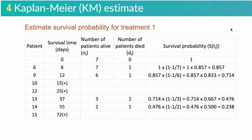This table shows how to calculate survival probability for treatment 1. Treatment 1 has 6 patients listed in column 1. Column 2 is the survival time, and the plus sign means censored data. The next column is the number of patients alive, and the fourth column is the number of patients died. The last column shows how we calculate the survival probability. At time 0, the survival probability equals 1. At day 8, the survival probability is calculated by multiplying the survival probability at time 0, which is 1, with 1 minus 1 seventh. Here, 1 is the number of patients died at day 8, and 7 is the number of patients alive at day 8.